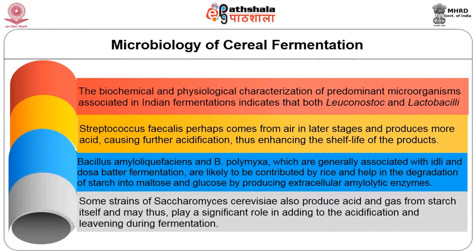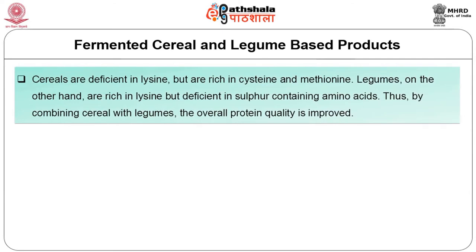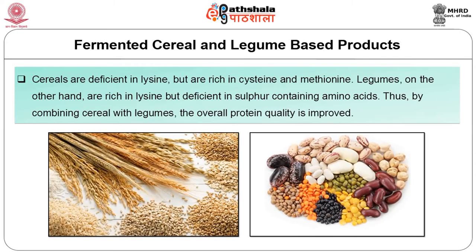Some strains of Saccharomyces cerevisiae also produce acid and gas from starch itself and may thus play a significant role in adding to the acidification and leavening during fermentation. Cereals are deficient in lysine but are rich in cysteine and methionine, while legumes are deficient in sulfur-containing amino acids such as cysteine and methionine; thus by combining cereals with legumes the overall protein quality is improved.